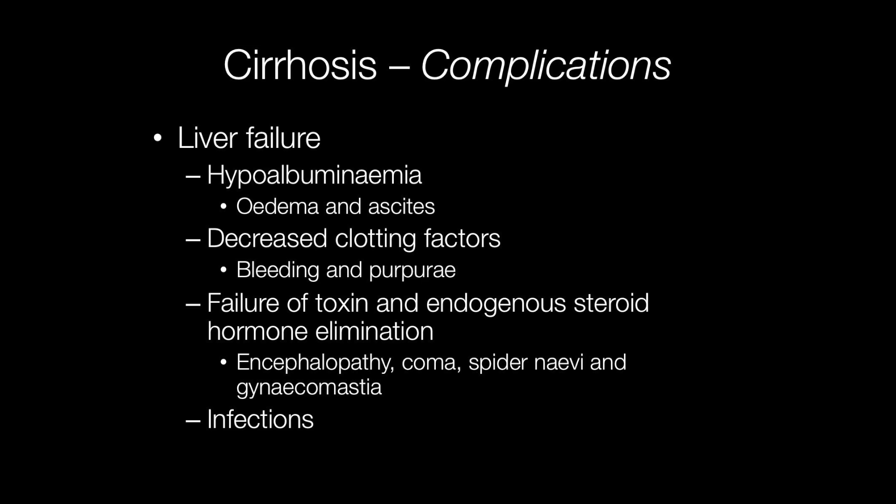Complications of cirrhosis include liver failure, portal hypertension, and the development of hepatocellular carcinoma. Consequences of liver failure include hypoalbuminemia — the liver fails to produce enough albumin, causing a drop in osmotic pressure of the blood, leading to edema and ascites. Decreased clotting factors result in bleeding and purpura. The liver also fails to eliminate toxins and endogenous steroid hormones, which may result in gynecomastia and spider nevi, and failure of toxin elimination may cause encephalopathy and coma. Patients with cirrhosis are also much more susceptible to infections.